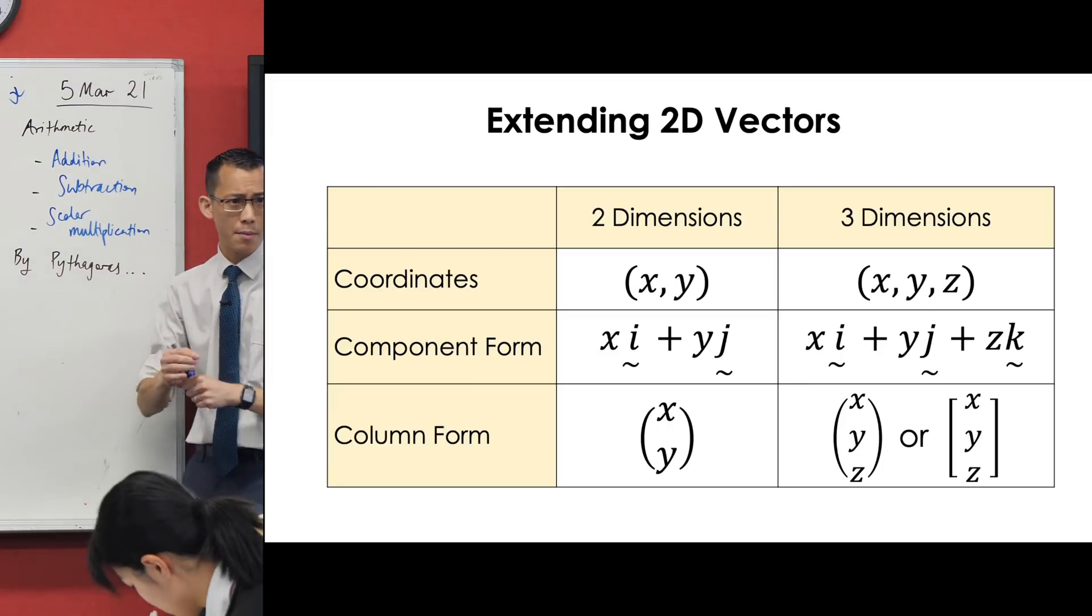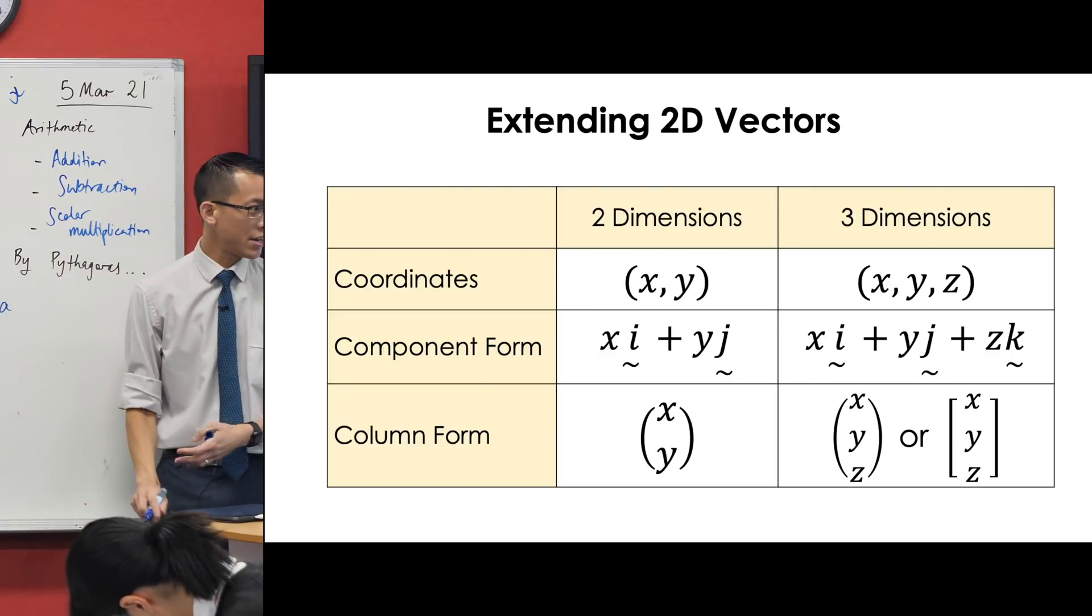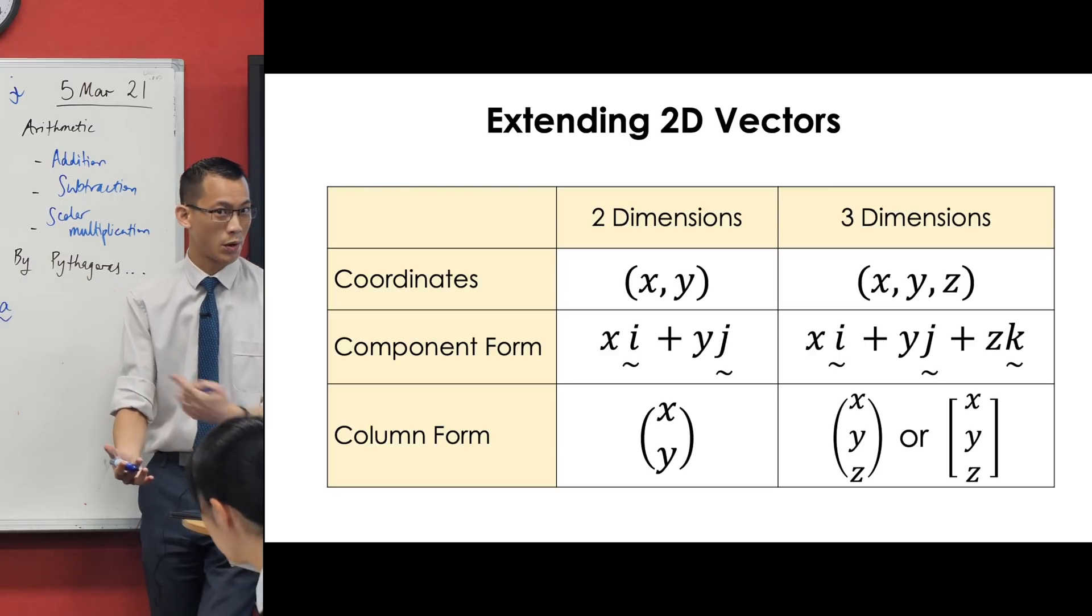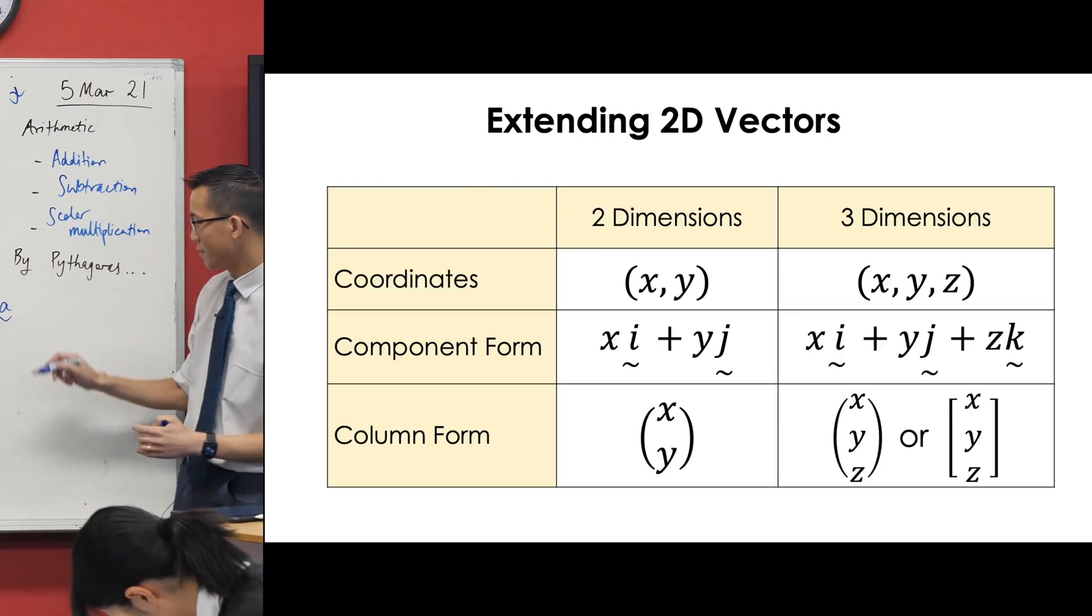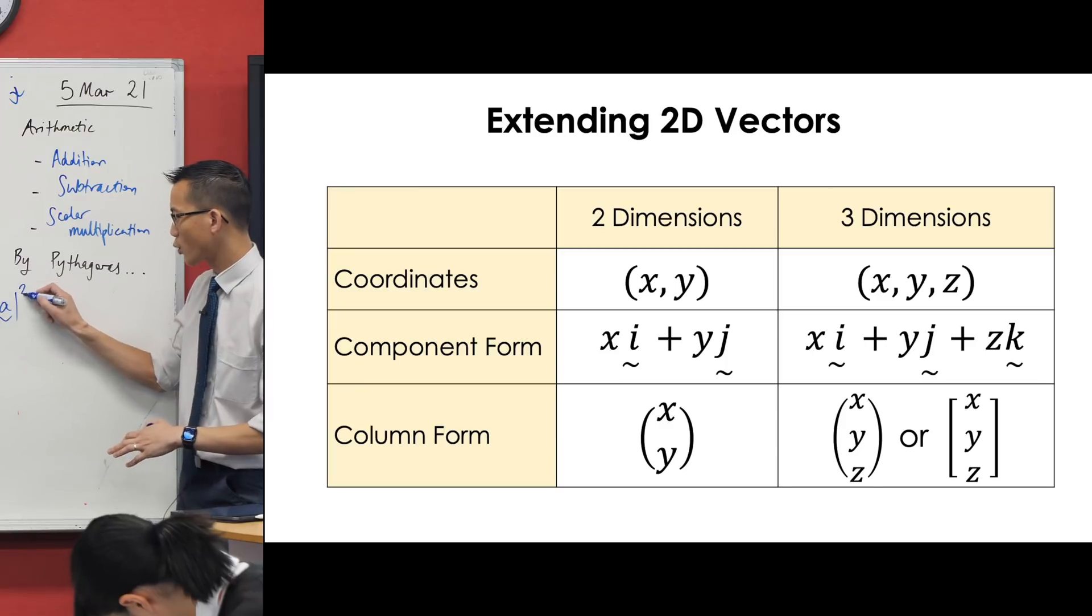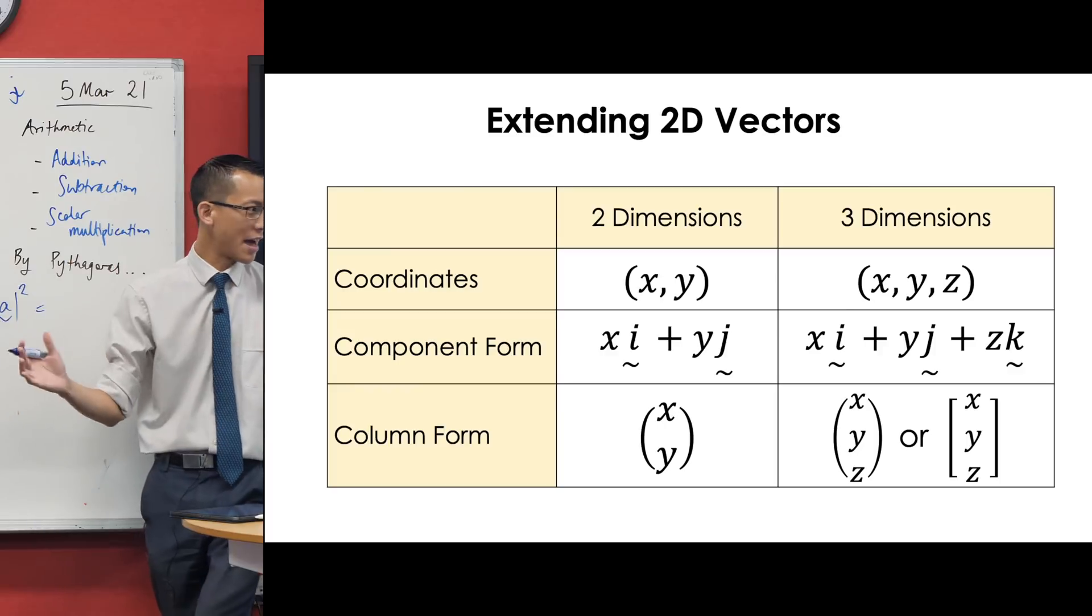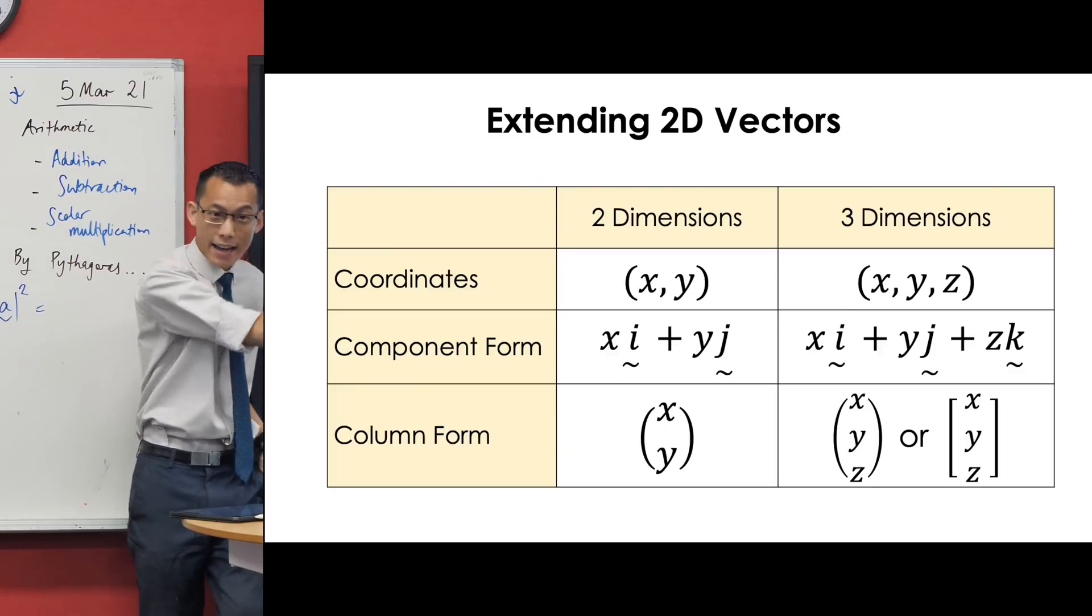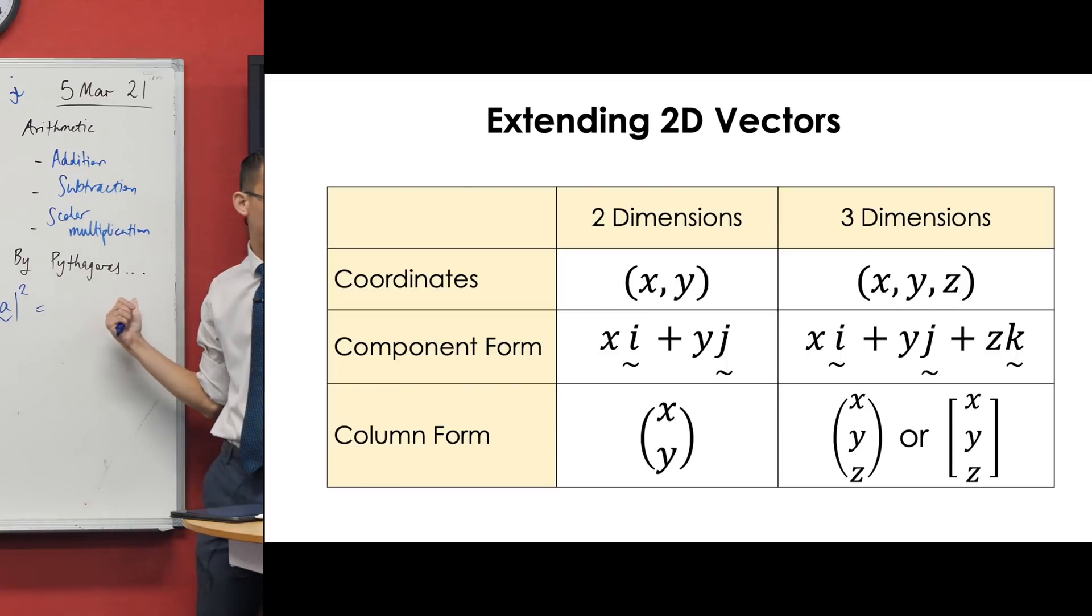We then took the distance formula. Going back to our vector notation, if I had some vector a, how would I talk about the magnitude of that? I'd put absolute value signs, which we've also remembered from complex numbers. It's modulus. If I square that, because Pythagoras talks about the squares of hypotenuses and sides in the triangle, then what are we going to get for that three-dimensional vector, x i plus y j plus z k?